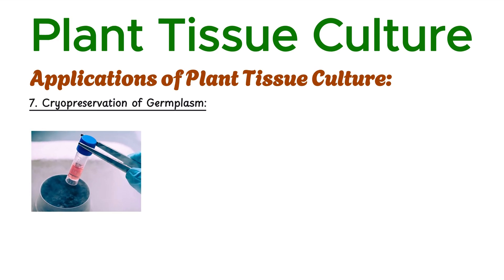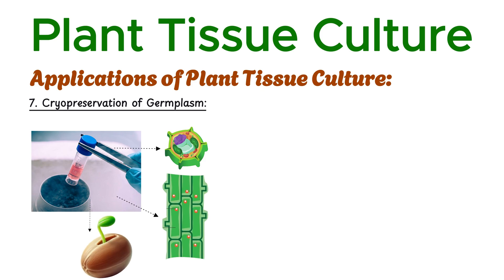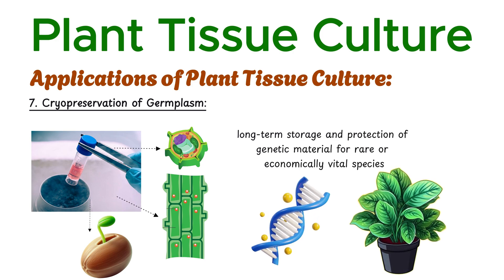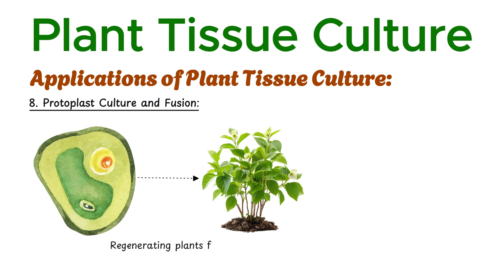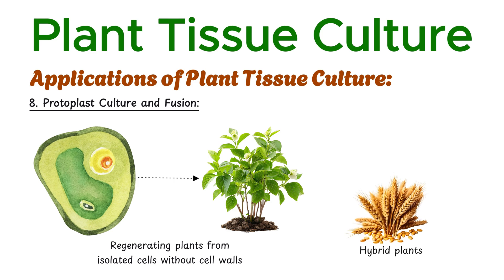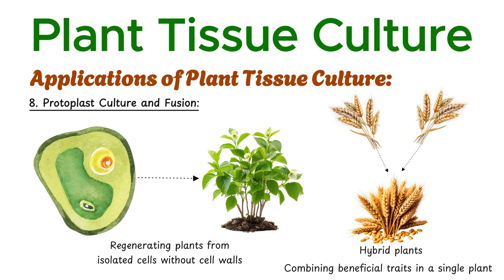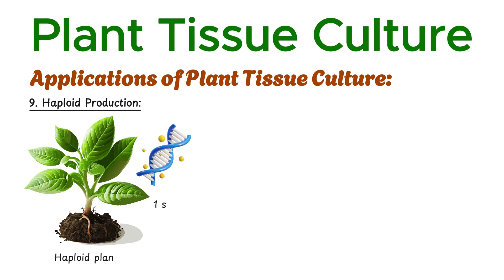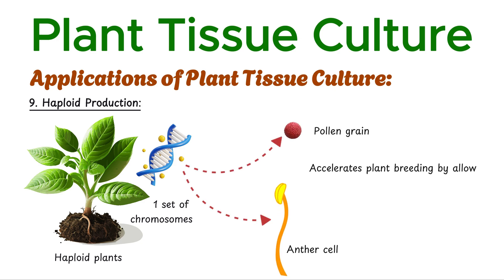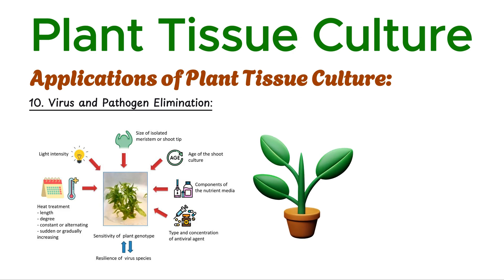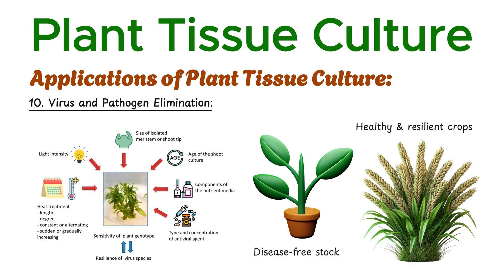Tissue culture techniques facilitate the cryopreservation of plant cells, tissues, or embryos in liquid nitrogen, ensuring long-term storage and protection of genetic material for rare or economically vital species. Protoplast culture involves regenerating plants from isolated cells without cell walls; additionally, protoplast fusion enables the creation of hybrid plants by merging cells from two different species, combining beneficial traits. Haploid plants, containing only one set of chromosomes, are produced via tissue culture using pollen or anther cells, accelerating plant breeding by allowing the development of homozygous lines in fewer generations. Through heat treatment and meristem culture, virus-infected plants can be regenerated into disease-free stock.